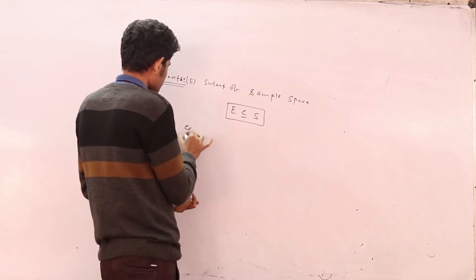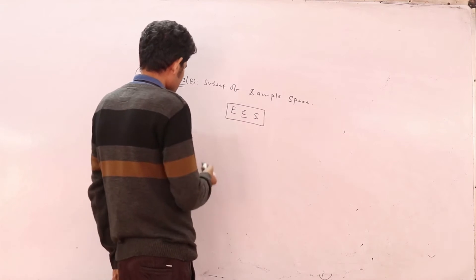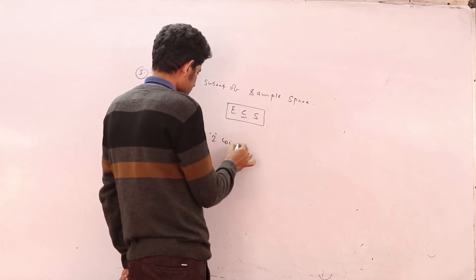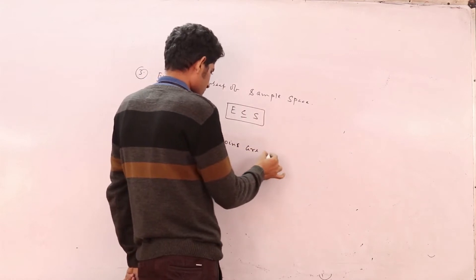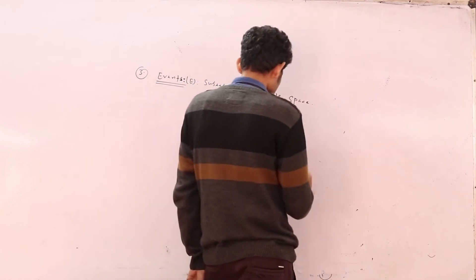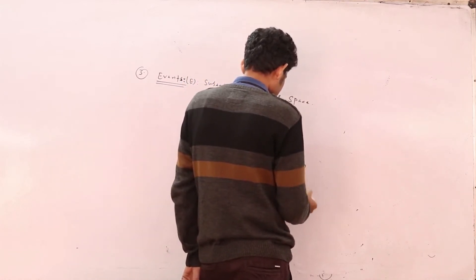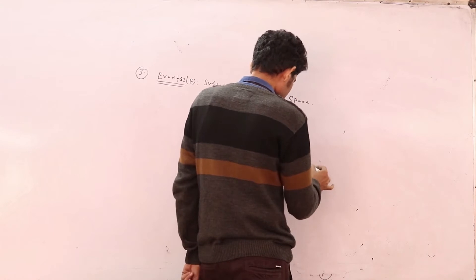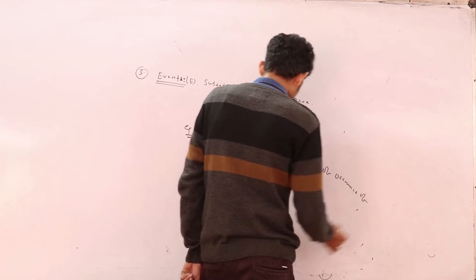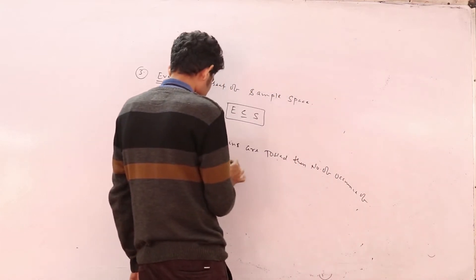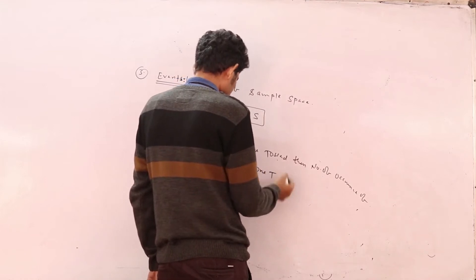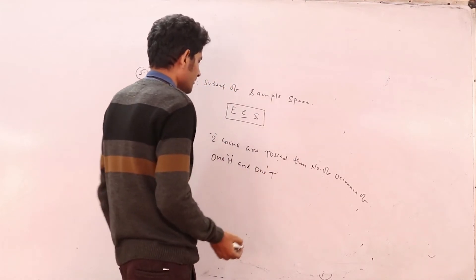For example, suppose two coins are tossed. Then consider the number of occurrences of one head and one tail.